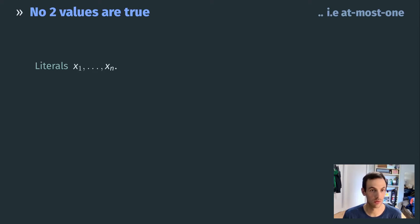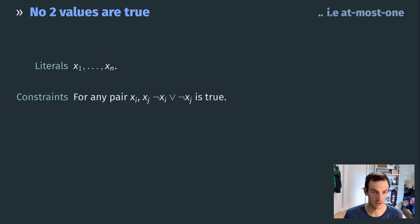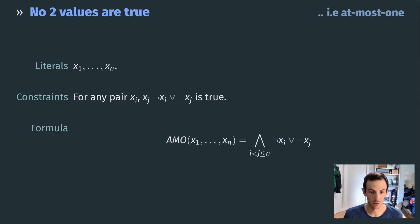Constraints of the type 'no two queens on the same row/column/diagonal' are called 'at most one is true'. For a set of literals x1 to xn, we ensure no two are true by adding, for every distinct pair (i,j): Or(Not(xi), Not(xj)). This means at least one of xi or xj must be false. The full 'at most one' formula is the conjunction over all distinct pairs (i,j) of Or(Not(xi), Not(xj)).